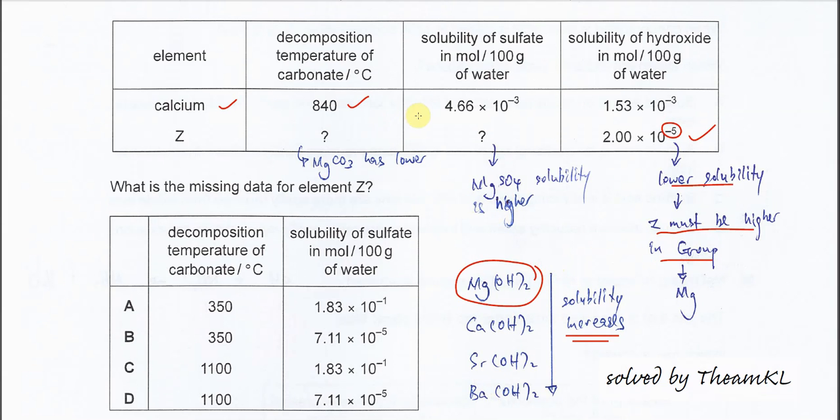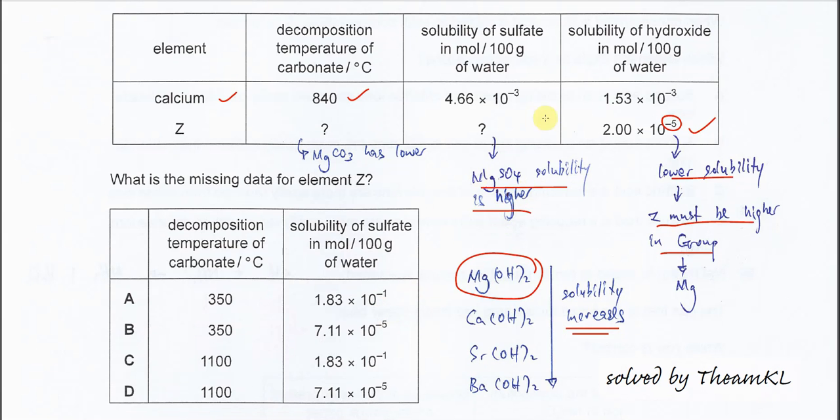For the solubility of sulfate of element Z, we know it will be higher because magnesium sulfate solubility is higher than calcium sulfate. Solubility of sulfate decreases down the group. Therefore we're going to look for higher solubility in the answer. Since calcium sulfate is 4.66 times 10^-3, higher solubility means we choose A or C.